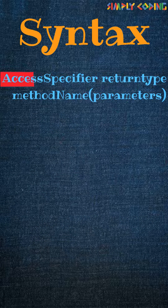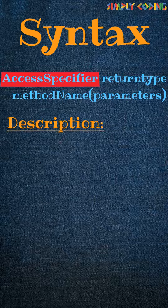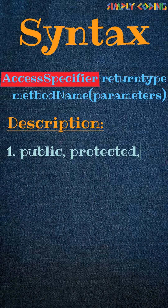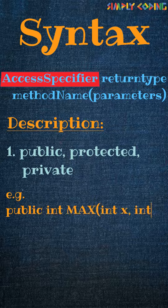Next is the access specifier, which can be public, protected, or private. We will cover this separately, but for the moment we will consider it public, which means everyone can use it.